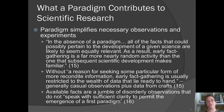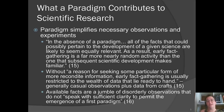So what does a paradigm do for you? It simplifies the observations and experiments you need to do by deciding on an order of priority for the phenomena you need to account for. In the absence of a paradigm, all of the facts that could possibly pertain to the development of a given science are likely to seem equally relevant. As a result, early fact-gathering is far more nearly a random activity than one that subsequent scientific development makes familiar. In some ways, before you have a paradigm, you may be more open to all kinds of evidence — you don't know what's important. But progress actually relies on a level of closure, on excluding certain observations as not worth analysis at that point.